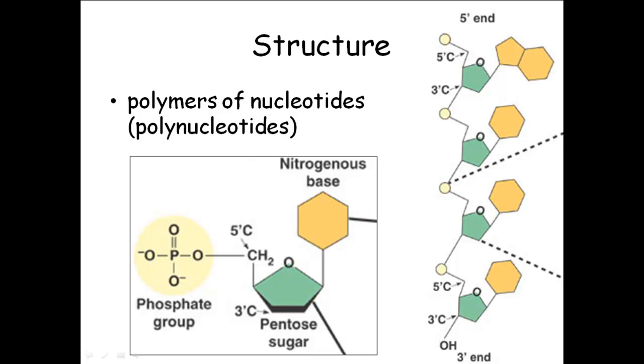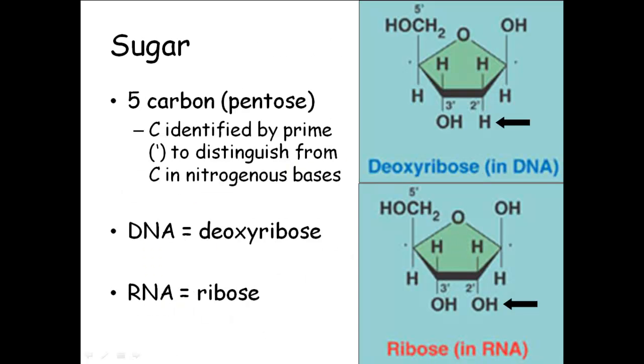Two basic types of nucleic acids, DNA and RNA. What's the difference? The first thing is the sugar. In DNA, the sugar is called deoxyribose. RNA is ribose. So that's one way that DNA and RNA are different. The sugar that makes up the nucleotides is a different sugar. RNA is ribonucleic acid. DNA is deoxyribonucleic acid.